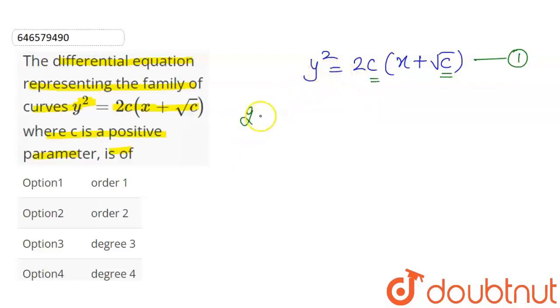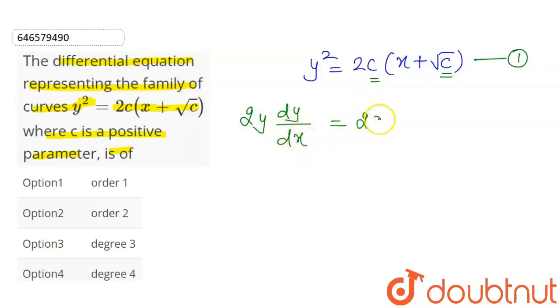So, differentiating once: LHS will be 2y dy/dx. On the RHS, 2c is constant; differentiating x gives 1, and the constant term gives 0.